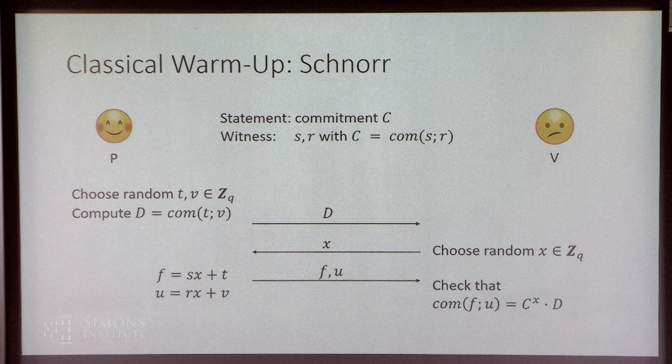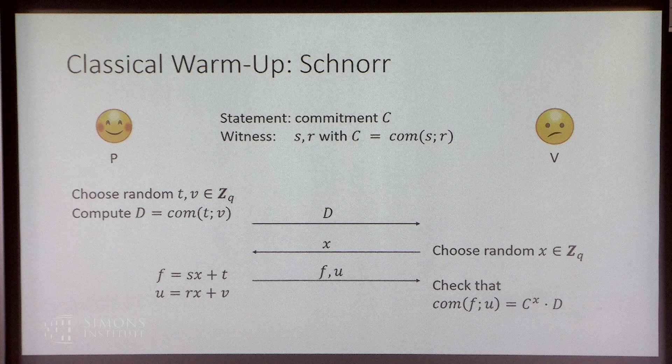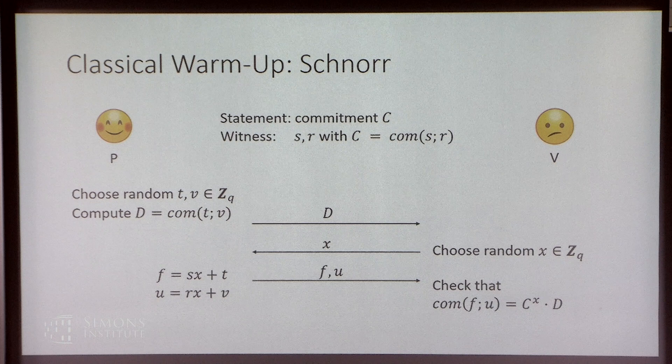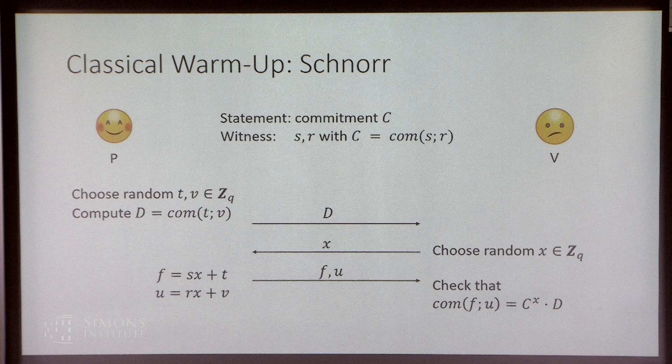In the Schnorr protocol, there's a Pedersen commitment that the prover and verifier know. The prover knows an opening s with randomness r. The protocol goes like this: the prover starts by choosing random masking values to hide the secret, commits to those, and sends them to the verifier. The verifier chooses a random challenge x and sends it back. Then the prover combines the secret, the challenge, and the masking value into a response f and similarly for u. Finally, the verifier checks some equation on the commitments and the prover's responses.